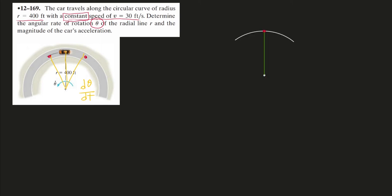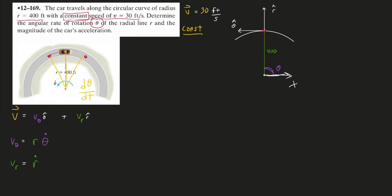Imagine there's a camera tracking this car as it drives around, and we need to figure out what is the angular speed of rotation of that camera. Here's the car at this instant. We'll make an arbitrary x-axis to get our angle. The direction of increasing angle gives us the transverse direction, and the radial axis is in the direction of increasing r.